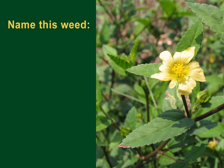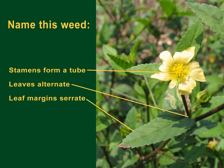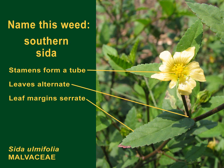With its flower like a tiny hibiscus, this weed has a very strong tap root. Its stamens, which bear the pollen, form a tube between the five yellow petals. The leaves are alternate on the stem, and the leaf margins are serrate. The plant is southern cyta, which is in the Malvaceae, or the mallow family.